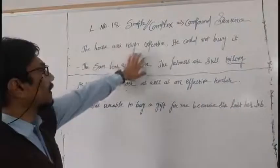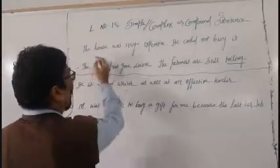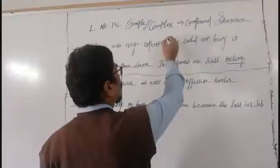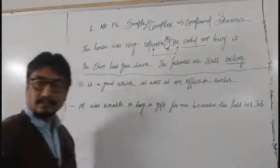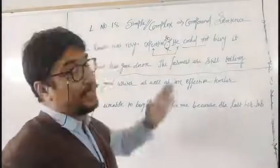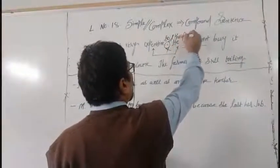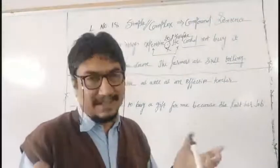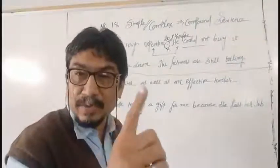You see here: 'The house was very expensive. He could not buy it.' This is the sentence from your text. First of all, remove the full stop. Why? Because reason and result are there — this is the reason, this is the result. Wherever reason and result is there, you go for 'therefore' or 'so'. Therefore he could not buy it — nothing is wrong. In this way you have made two simple sentences into one compound sentence.